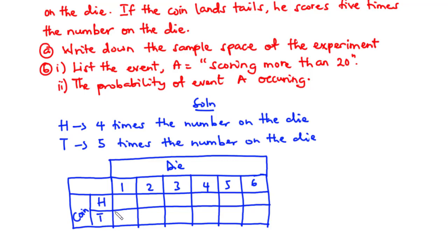Assuming the player tosses the coin and it lands heads: if he throws the die and gets a one, we multiply four by one to get four — so we have heads and 4. If the die shows two, four times two gives eight — heads and 8. Continuing: heads and 12, heads and 16, heads and 20, heads and 24.